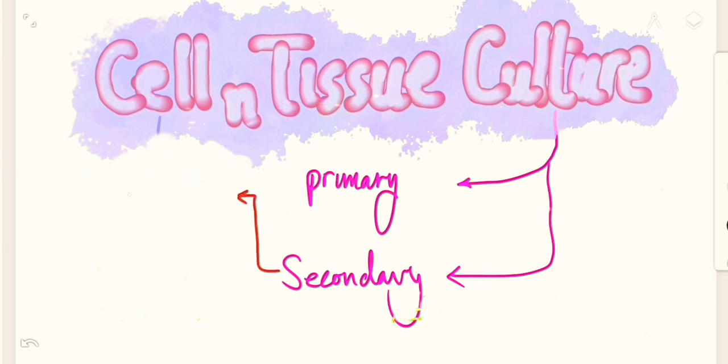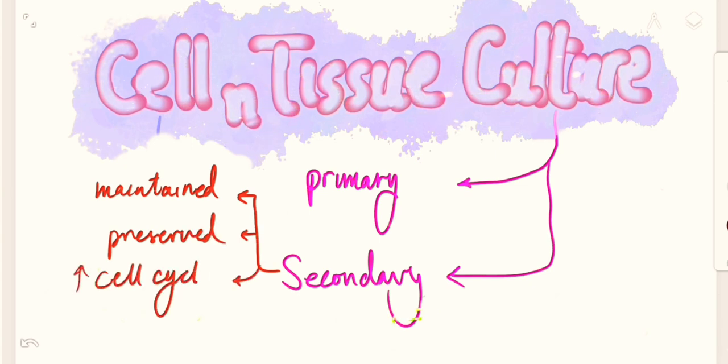The method of secondary culture is in a way that in it the tissue or the cell is maintained, preserved, and the cell cycle is increased, therefore the life of the cell is being increased.